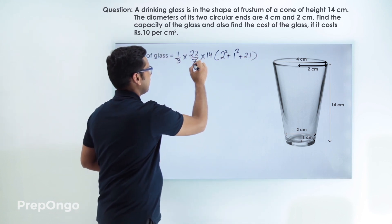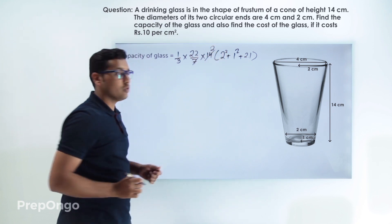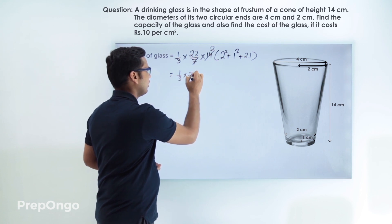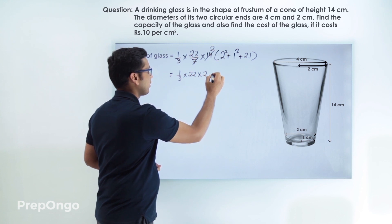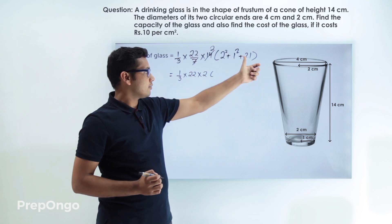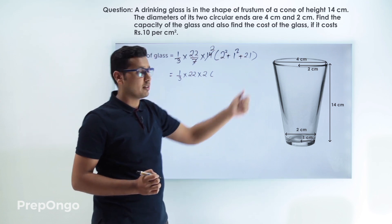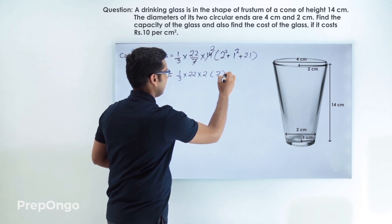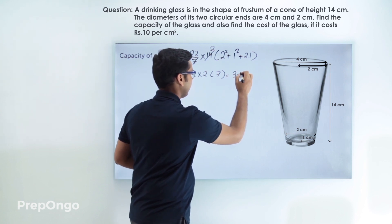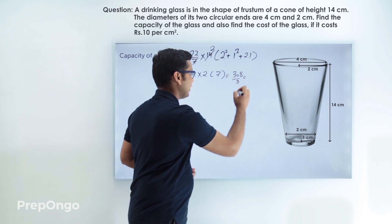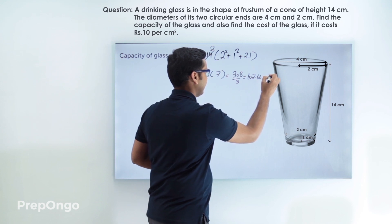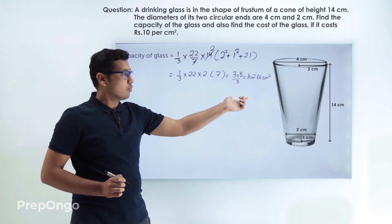Now let's solve this. This comes out to be one-third into 22 into 2, and inside the bracket: 2 squared is 4, plus 1 squared is 1, plus 2 into 1 is 2. So 4 plus 1 is 5, and 5 plus 2 is 7. Multiplying further, we get 308 by 3, which comes out to be 102.66 centimeters cubed. So this is the volume, that is the capacity, of this glass.